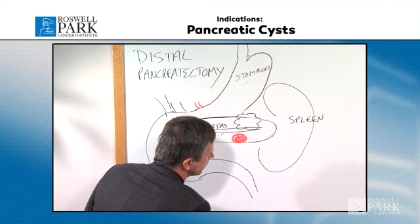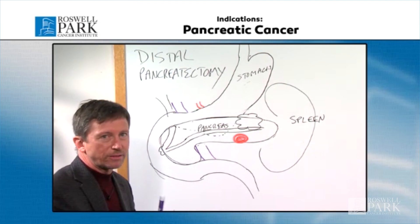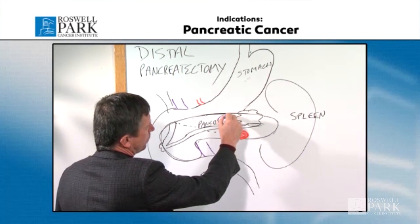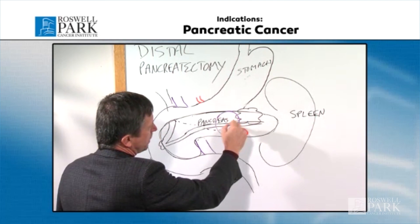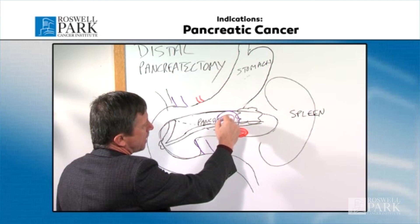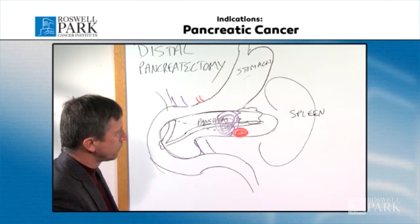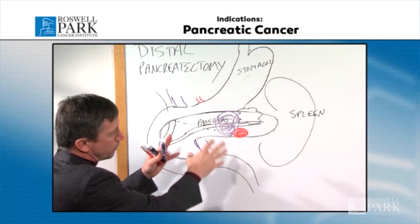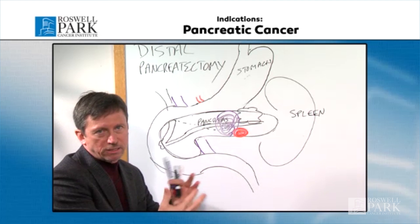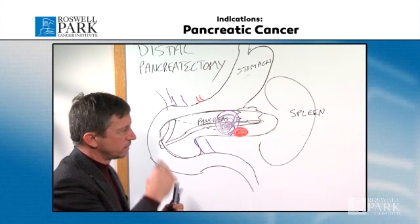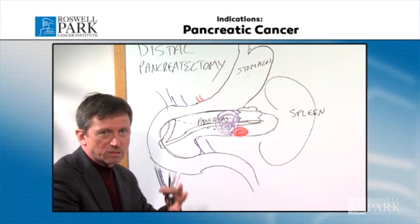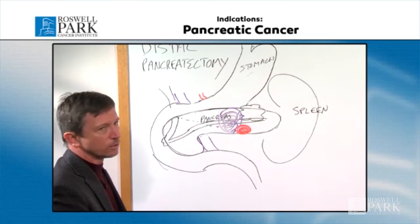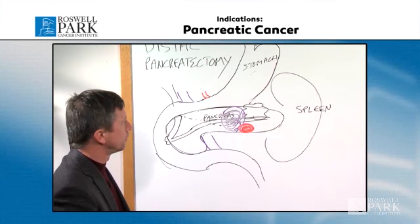A third common indication would be if you have an actual cancer of the pancreas — for example, there would be a mass here and a more solid appearing tumor. All of the indications involve basically a very similar procedure, but we'll talk specifically about your particular type of tumor and the follow-up for that.